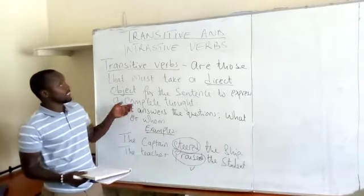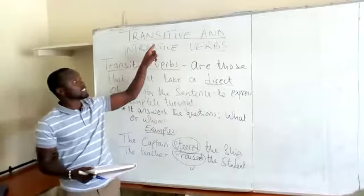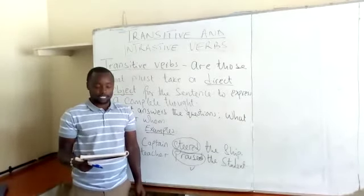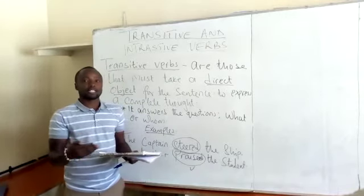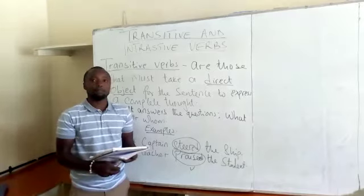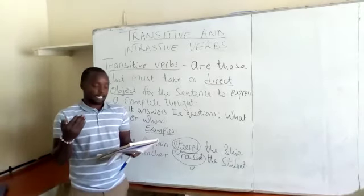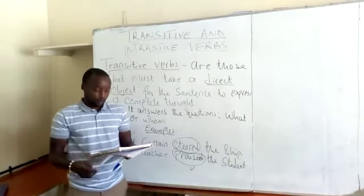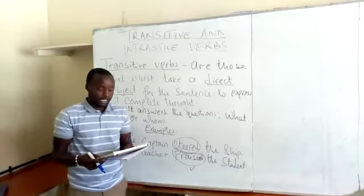As you are noting, the easiest way to identify a transitive verb is to look for the question that it answers. Because basically, transitive verbs answer the questions 'what' or 'whom.' Without the noun, we will not be knowing what it is that we are talking about.